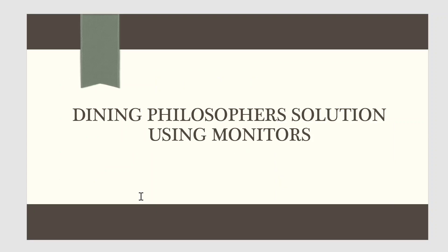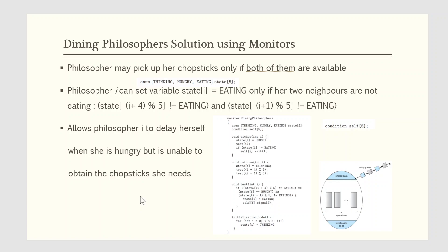Next, we illustrate monitor concepts by presenting a deadlock-free solution to the dining philosopher's problem. This solution imposes the restriction that a philosopher may pick up her chopsticks only if both of them are available. To code this solution, we need to distinguish among three states in which we may find a philosopher: thinking, hungry, and eating. For this purpose, we introduce the following data structure, which is an enumerator named state of 5.